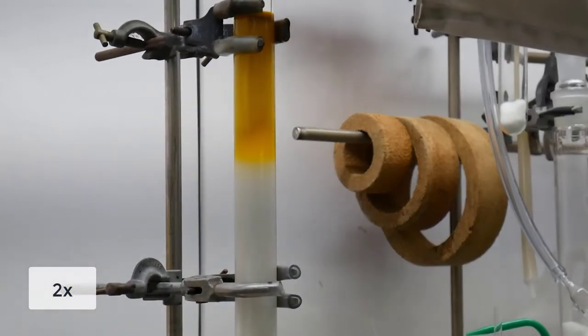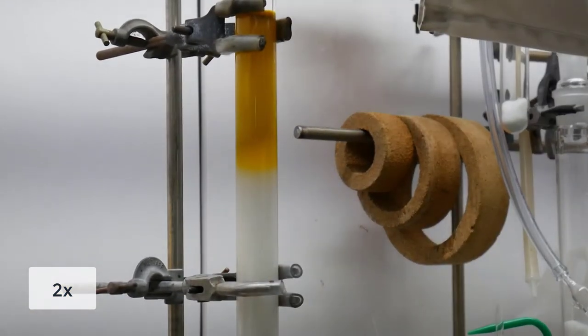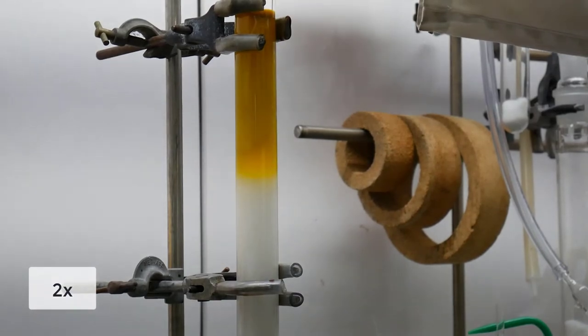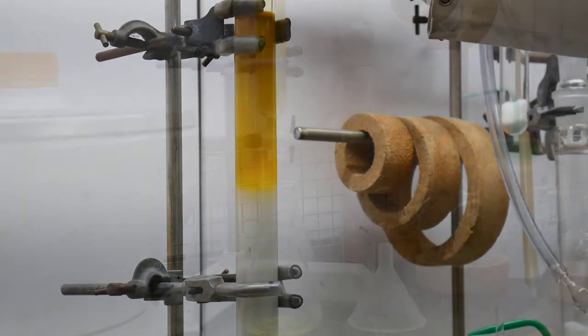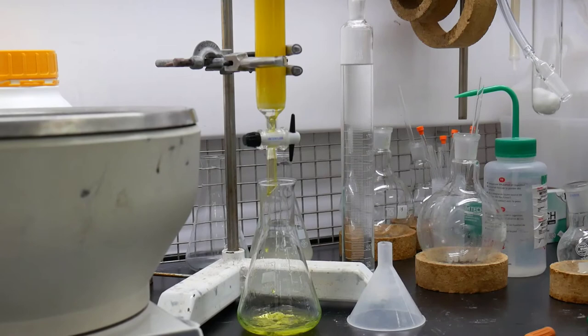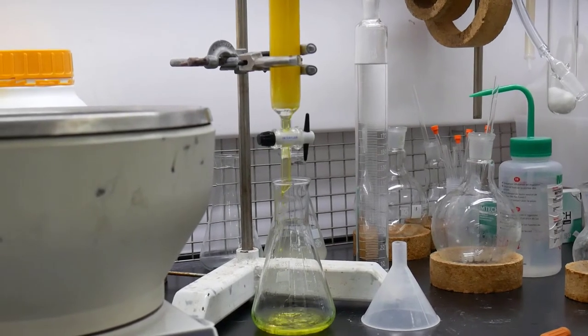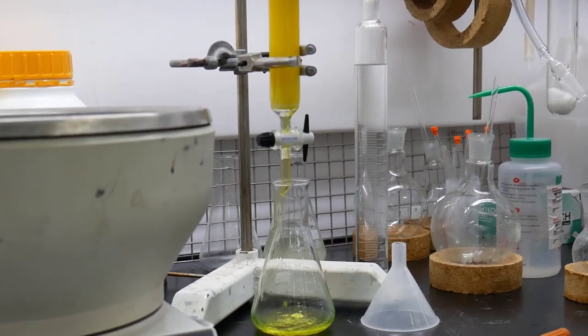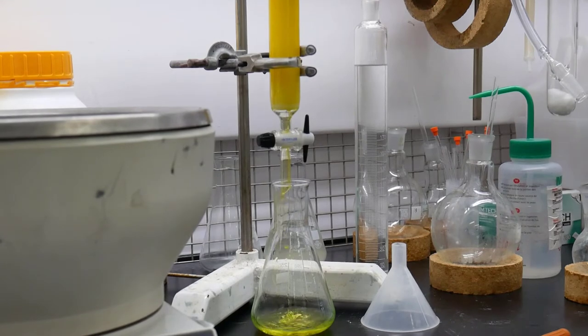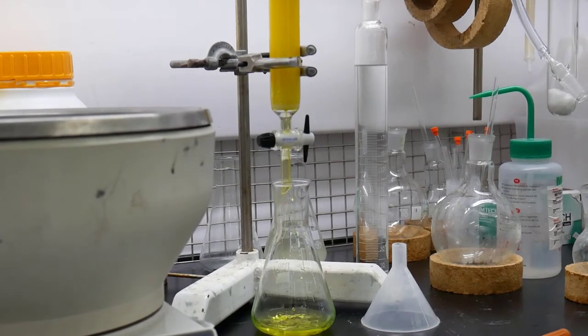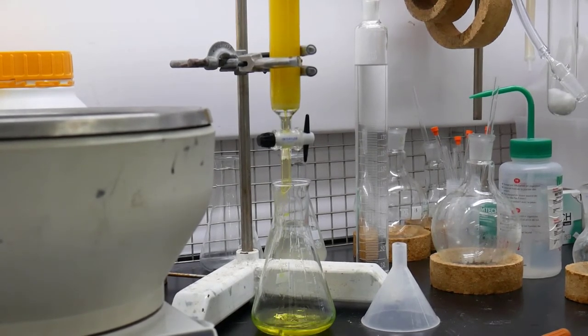Here you can see the yellow is moving slowly through the column and the yellow is the compounds that I desire. Once this compound reaches the bottom of the column it drips out the bottom and I'm able to collect it and remove the solvent to afford my nice clean compound.